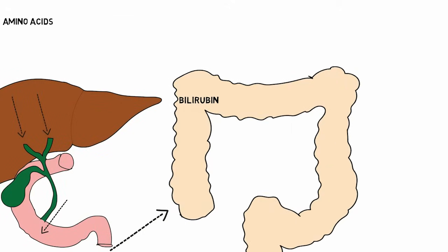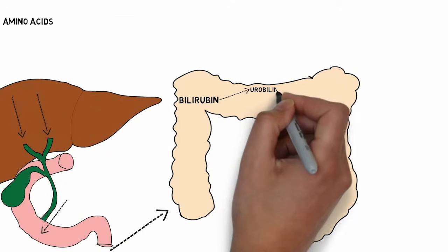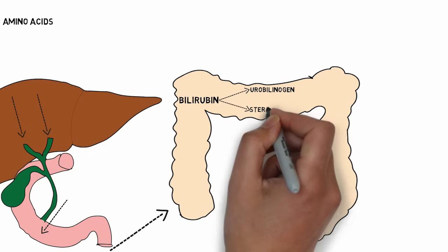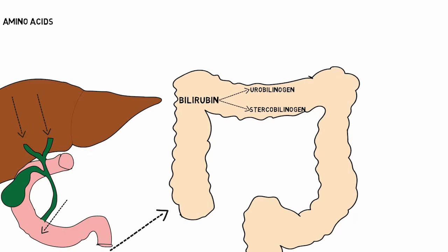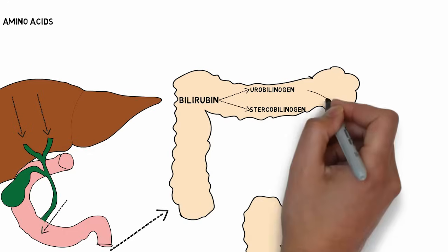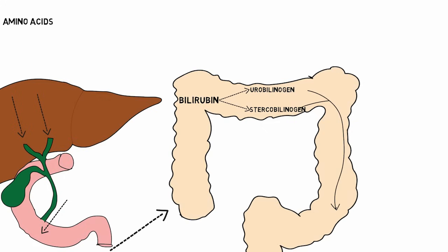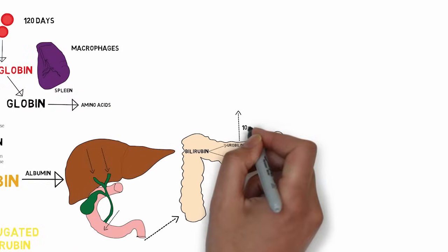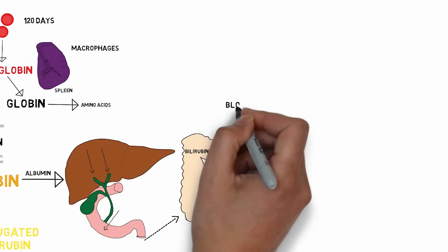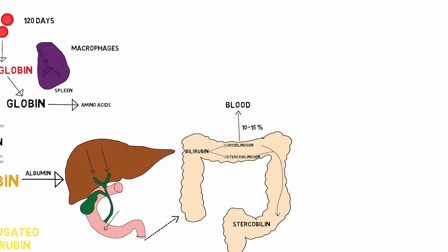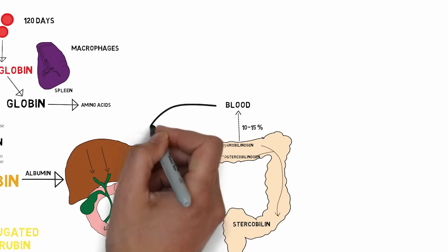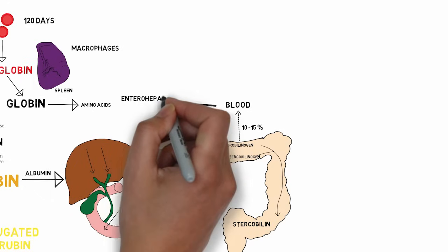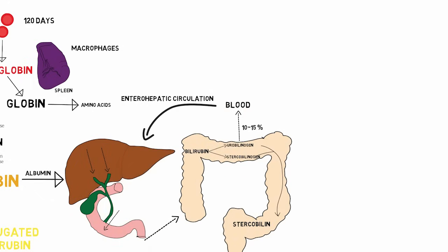In the colon, the bilirubin is acted upon by a number of microorganisms and is converted into urobilinogen and stercobilinogen. The majority of these compounds are excreted in the feces in the form of stercobilin, which imparts yellow colour to the feces. But 10-15% of these compounds are reabsorbed into the blood, and some part of that reaches the liver — this is known as the enterohepatic circulation.